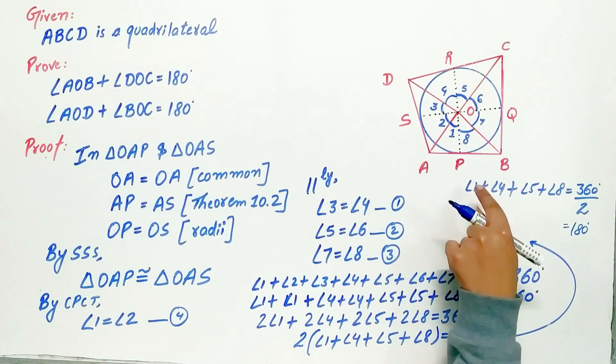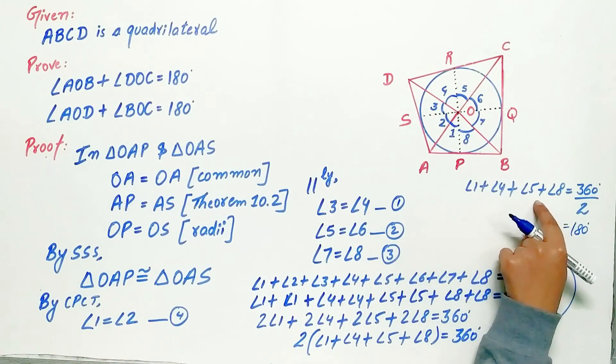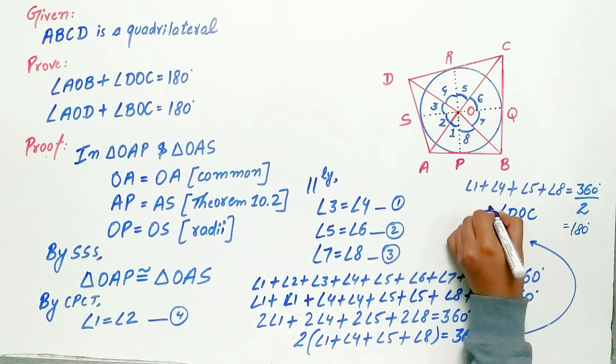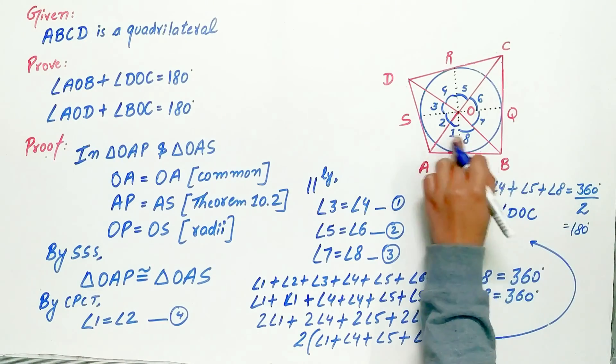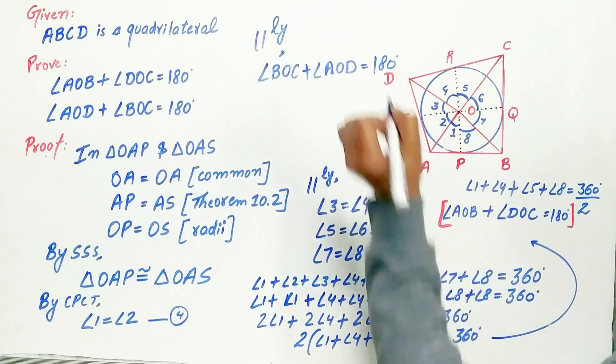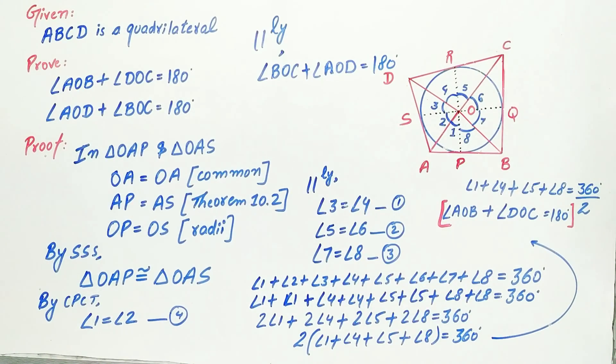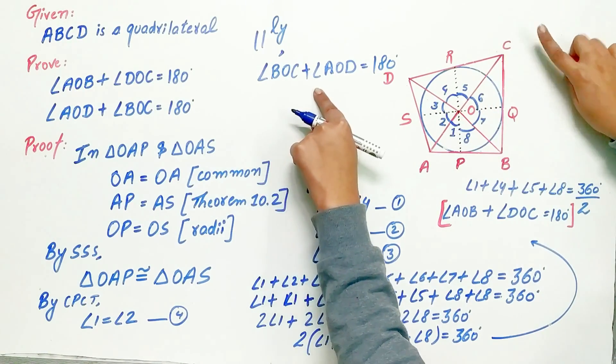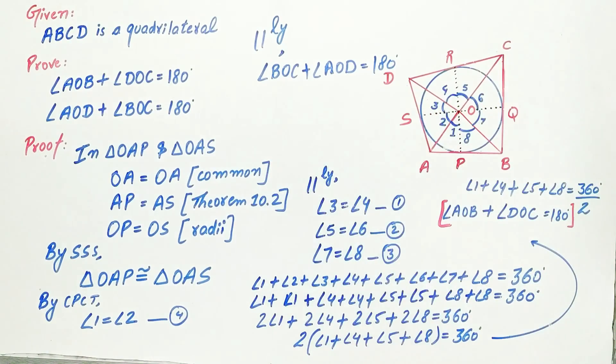Now look carefully. Angle 4 plus angle 5 is angle DOC, and angle 1 plus angle 8 equals angle AOB. And similarly, we can prove that angle BOC plus angle AOD equals 180 degrees.